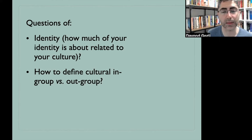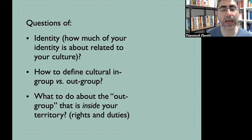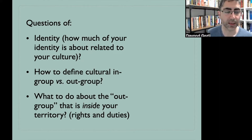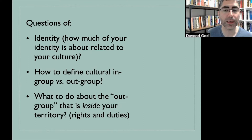Another question that comes out of that is: how should you deal with people who belong to the out-group category? What to do about the out-group, especially the out-group that is inside your territory — people who live in your city but seem different because of their cultural backgrounds. What are the rights and duties towards people who are culturally different, from both sides of that relationship? And it is not just individuals that decide about these questions; policy makers also make decisions about identity, group membership, and treatment of people across different sides of the multicultural divide.